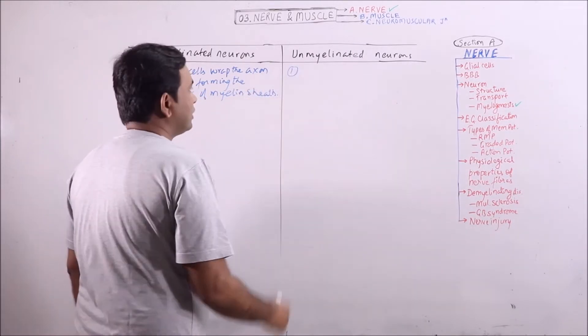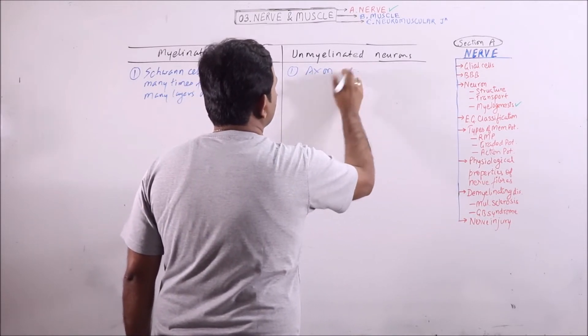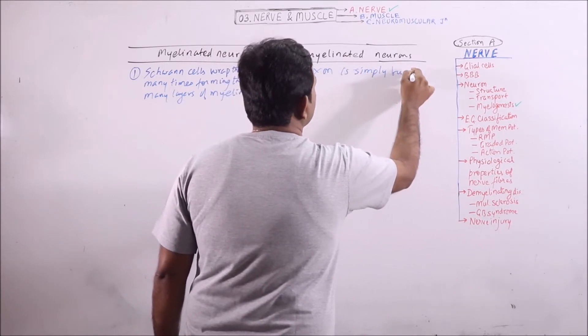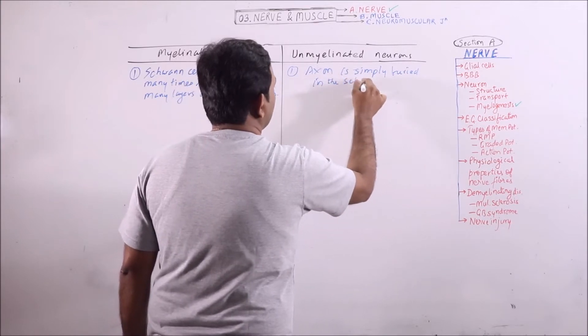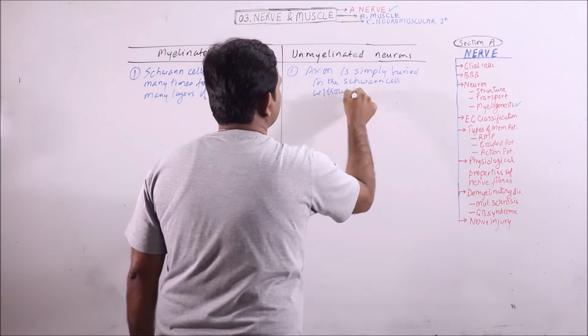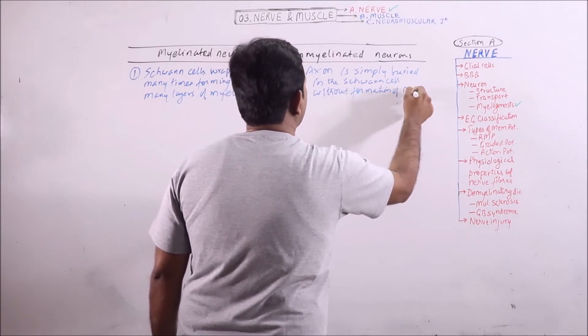While here, the axons are simply buried in the Schwann cell without formation of myelin sheath.